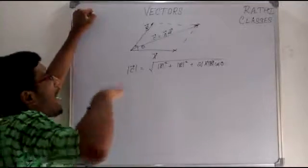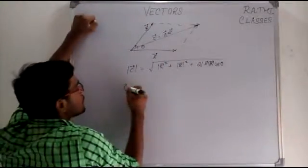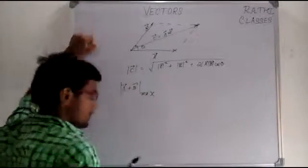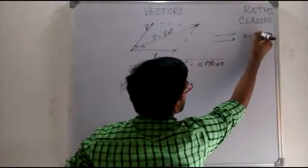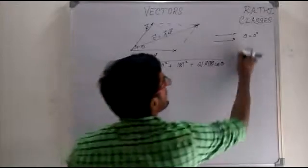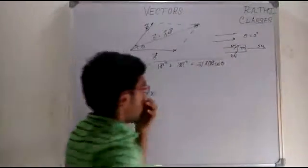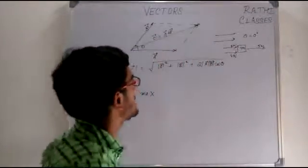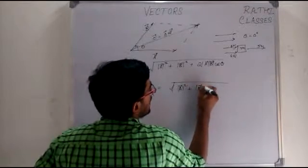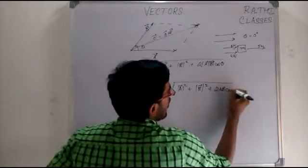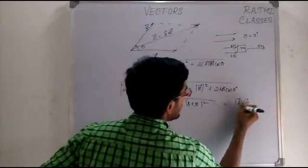Now I need to find the angle between the two vectors when the resultant will be maximum. By common sense, A plus B maximum will be when theta between them is 0 degrees — that is, the two vectors are acting on the same line. For example, if there is a mass M and two forces of 1 newton and 4 newton acting on the same line, the resultant will be 5 newtons. So A plus B max equals root over of A squared plus B squared plus 2AB cos 0°, which simplifies to A plus B.